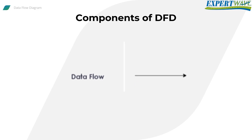Data Flow is the pipeline where the package of information flows. The arrow is the symbol of a data flow, and we label the arrow with the name of the data flowing through it. The arrow represents the direction of flow, which can also be bidirectional. A given flow should only transfer a single type of information.